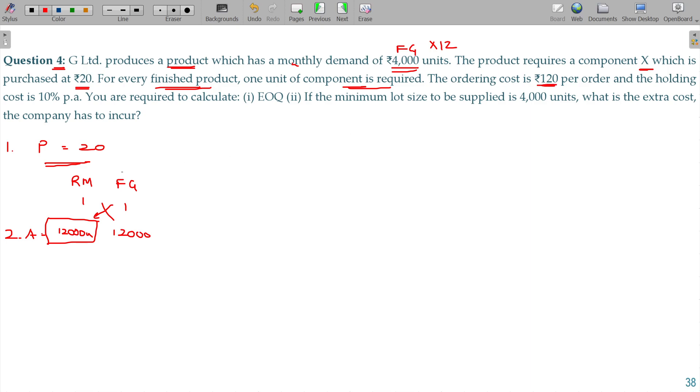The ordering cost being 120 and holding cost being 10 percent. Carrying cost per unit per annum - price is multiplied with the carrying cost percentage, so 2 rupees.